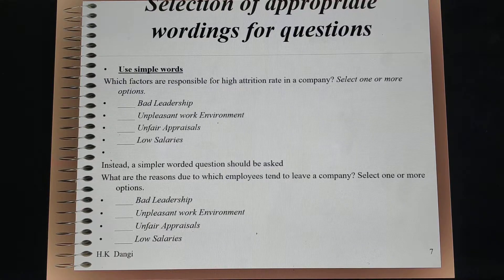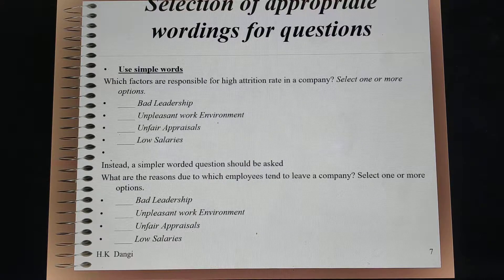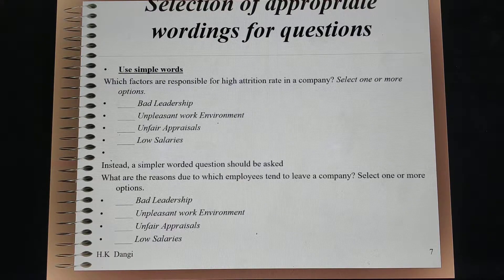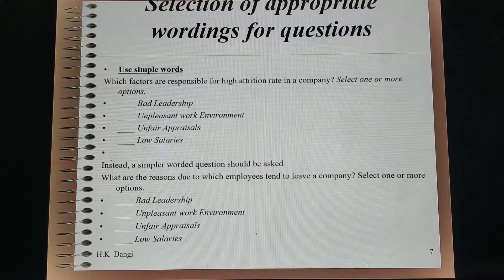One common observation while designing questions is that people use very complicated words or jargons. One should use simpler words. For example, instead of asking 'Which vectors are responsible for high attrition rate in a company?', you should word it as 'What are the reasons due to which employees tend to leave a company?' We should not use jargons; we should use simpler words.